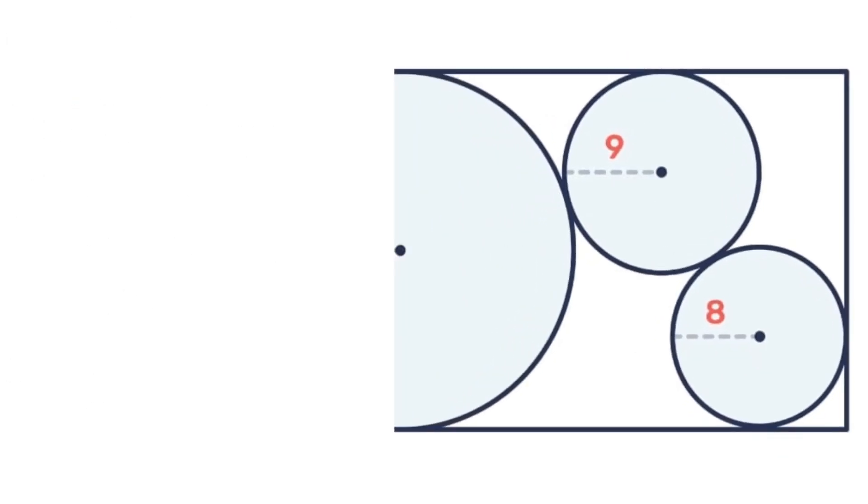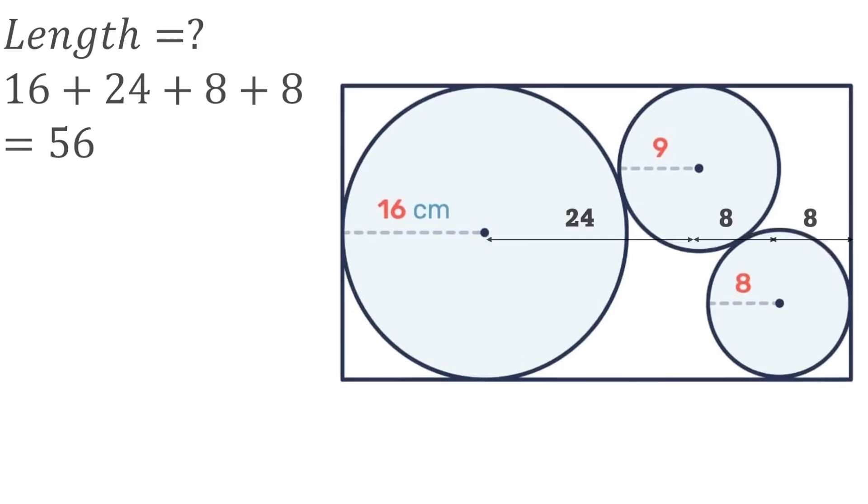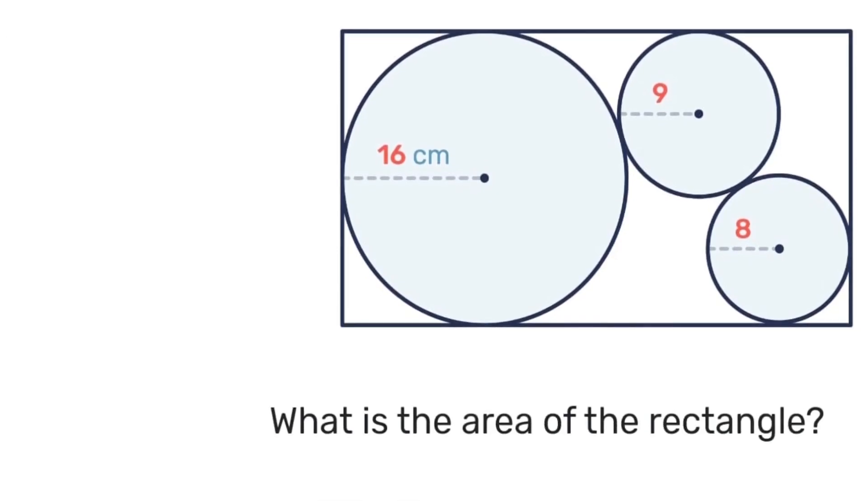Looking at the big picture, the length will be 16 plus the first distance of 24 that we found, plus that second distance of 8, plus one last distance of 8, which is the radius of the smallest circle. So 16 plus 24 plus 8 plus 8 gives us that the length is 56.